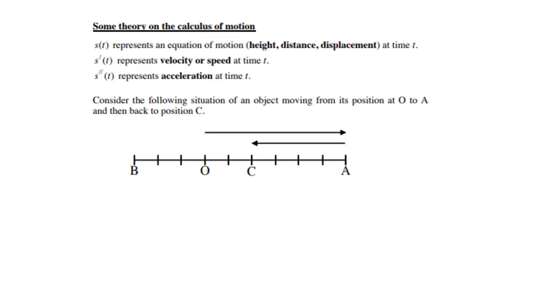Let's look at some theory on the calculus of motion. The S of t represents an equation of motion, so that can be height, distance, displacement at a certain time t. S prime t, that is the first derivative, represents velocity or speed at time t. And then S with a double prime t means second derivative represents acceleration at time t.